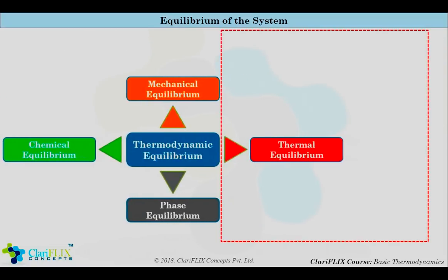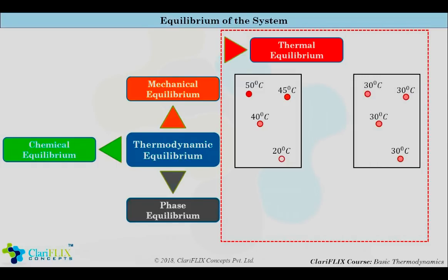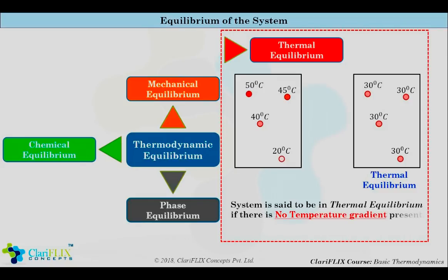Now let us look at thermal equilibrium. Consider a system having different temperatures at different points. After some time, all the points of the system are at the same temperature — then the system is said to be in thermal equilibrium. In other words, a system is said to be in thermal equilibrium if there is no temperature gradient present in the system, meaning the temperature distribution all over the system is the same.